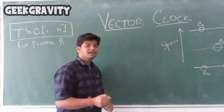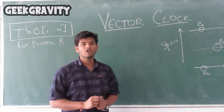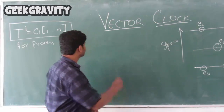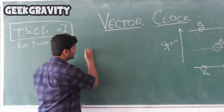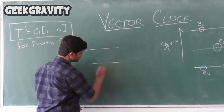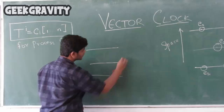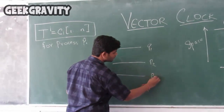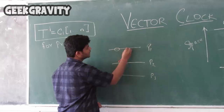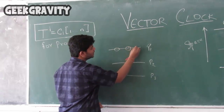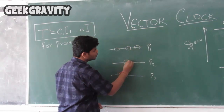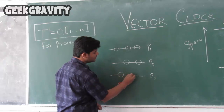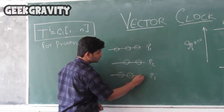The main limitation of the Lamport clock was the partial order. Let us see: if there are three processes — P1, P2, P3 — and if you have three events in P1, two events in P2, and three events in P3.